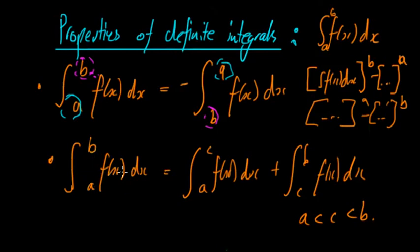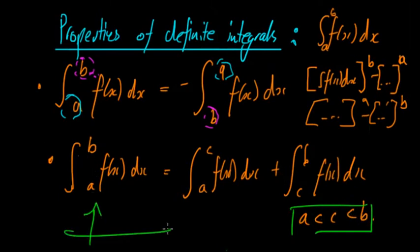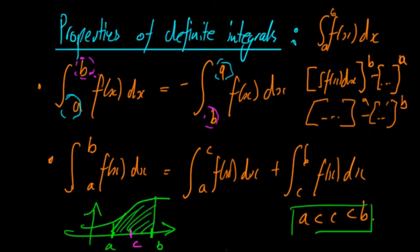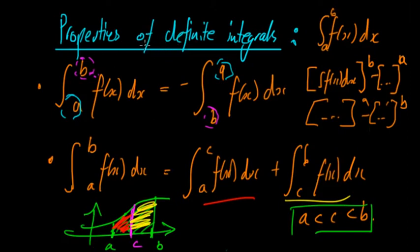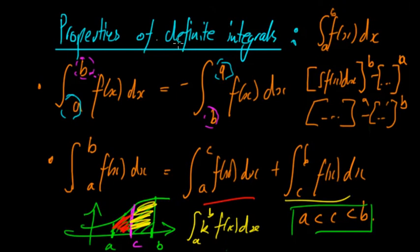Another property is that the integral from a to b of f(x) dx equals the integral from a to c of f(x) dx plus the integral from c to b of f(x) dx, where c is greater than a but less than b. Visually, you have points a, b, and c between them — you can calculate the total area as the area from a to c plus the area from c to b. It also follows all the other properties of indefinite integrals, such as taking a constant k out of the integral.